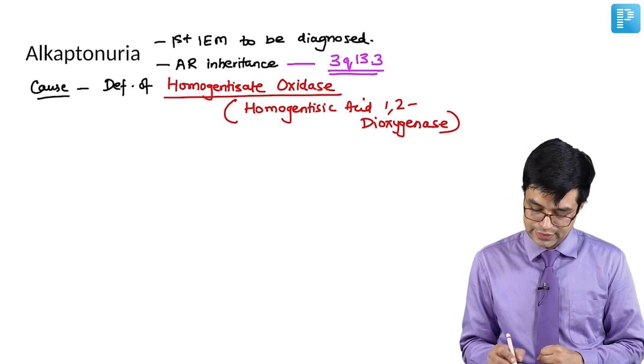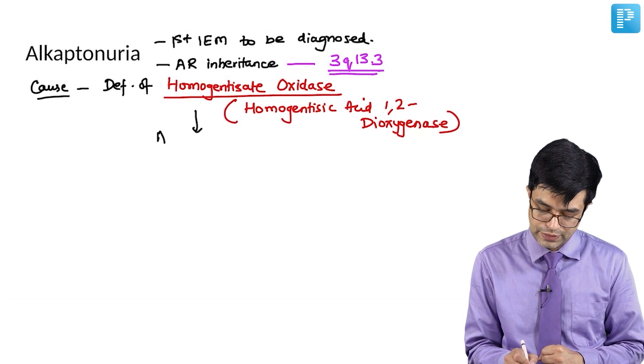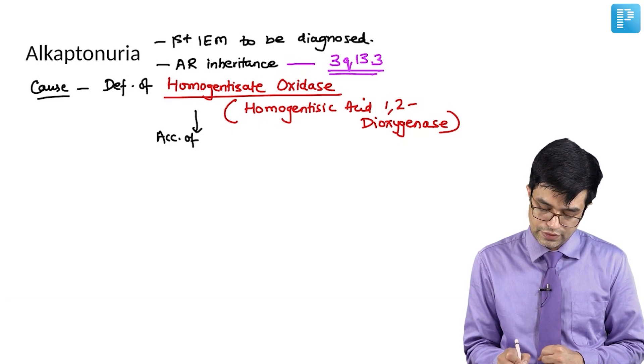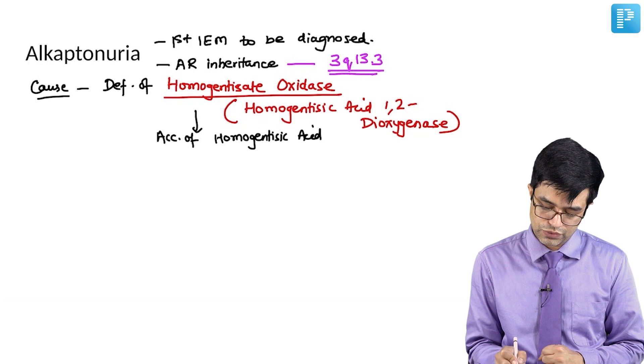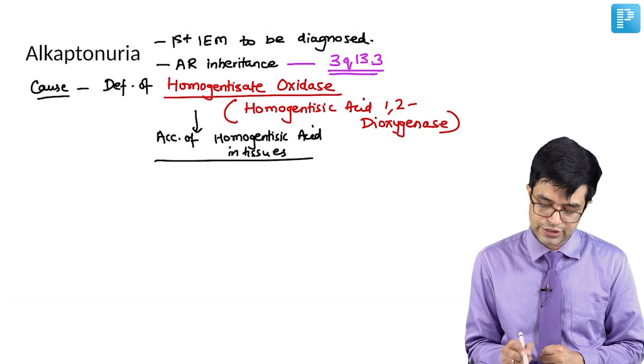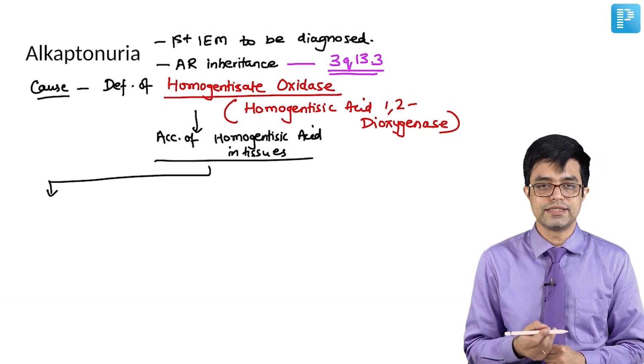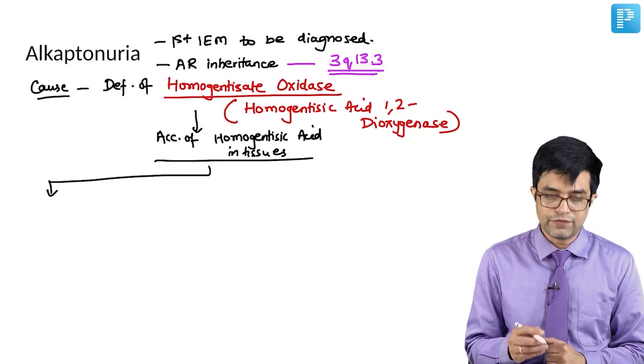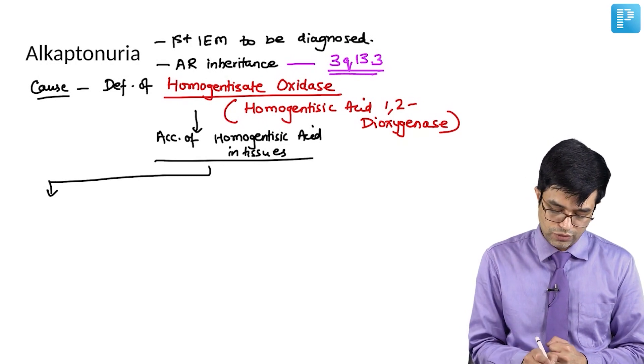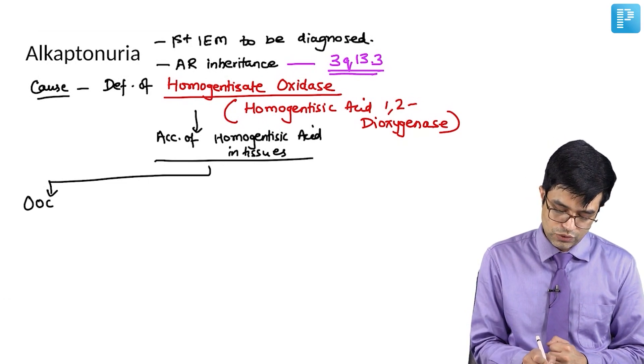Because of this, there is accumulation of homogentisic acid in various tissues. What are the manifestations that will develop? First of all, this homogentisic acid, which is dark in color, will deposit in the tissues producing a condition called ochronosis.